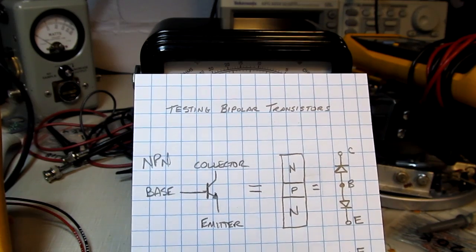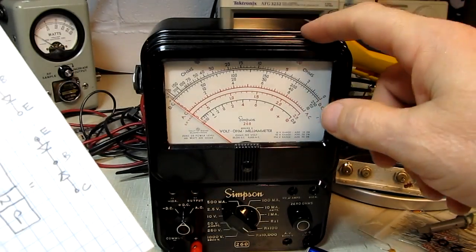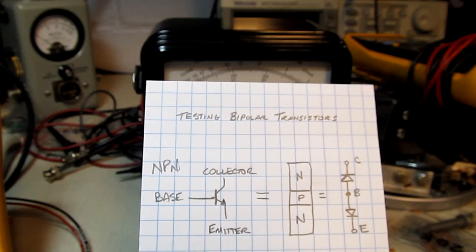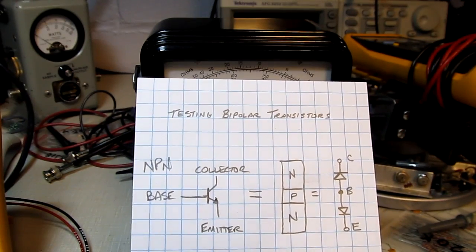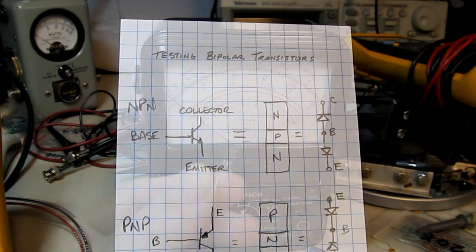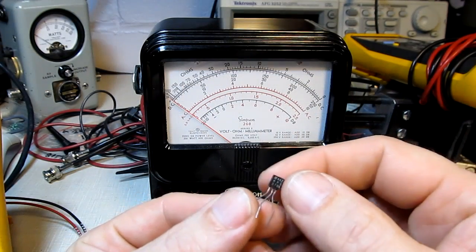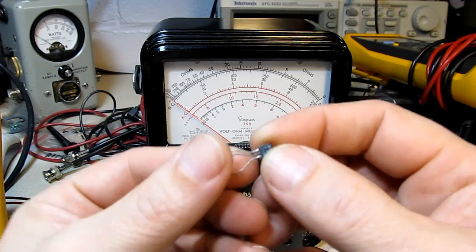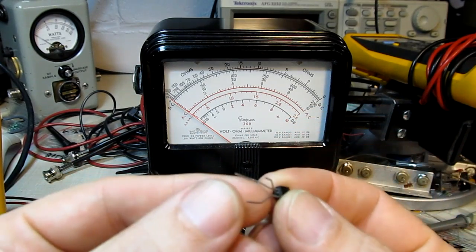So that could be done with an old analog multimeter like this Simpson 260. We'll do that first and then we'll look at some other tools that could be used that might give you a little bit more information. Of course one of the more important things to know before you go to test a given transistor is to know its pinout.